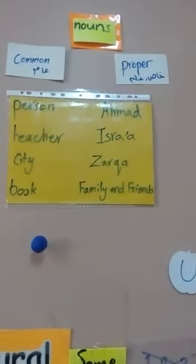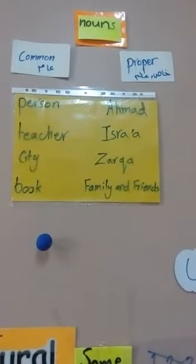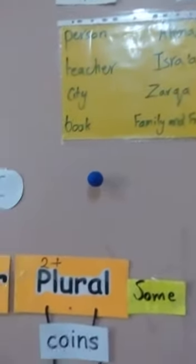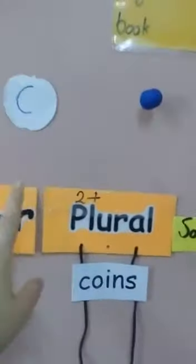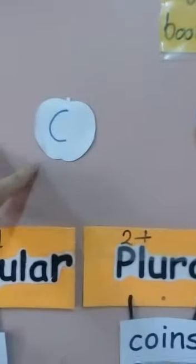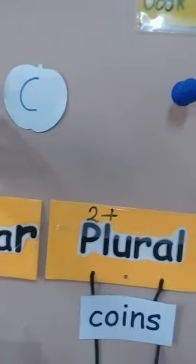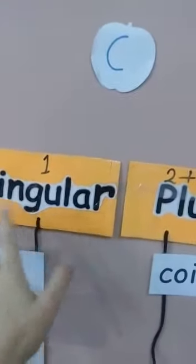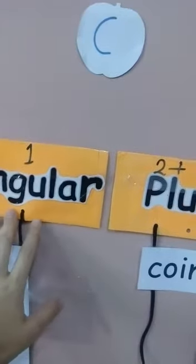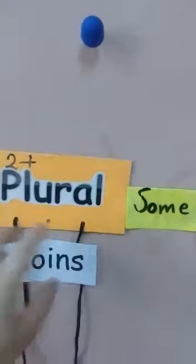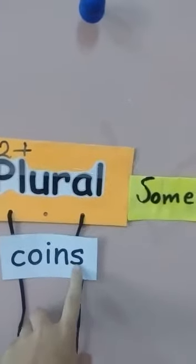Nouns can be divided into common or proper nouns, and also countable or uncountable nouns. Countables — الأسماء المعدودة — I can count them. You can find them in singular form, بكونوا إما بمفرد, or plural form, بصيغة الجمع, with S or ES.